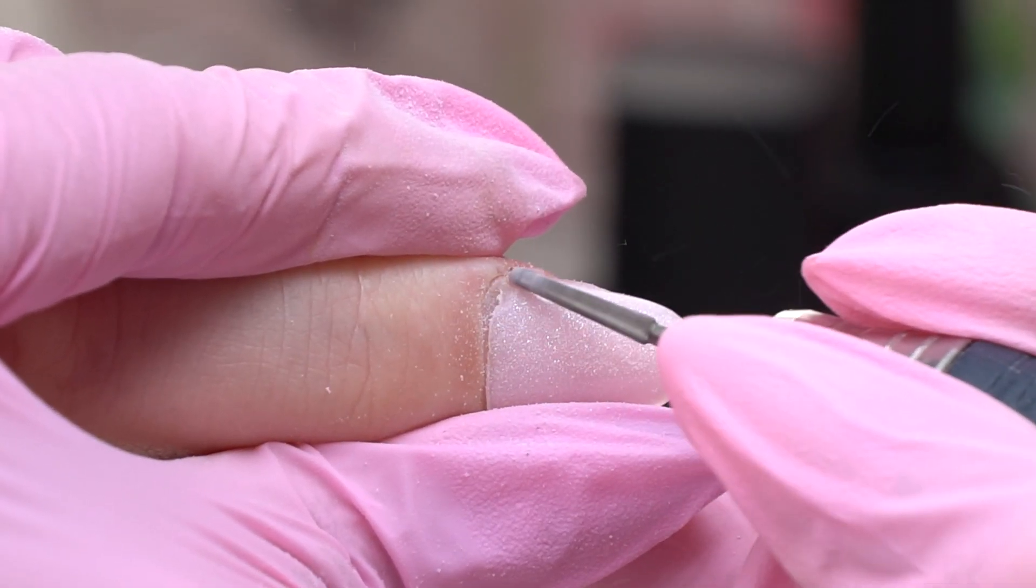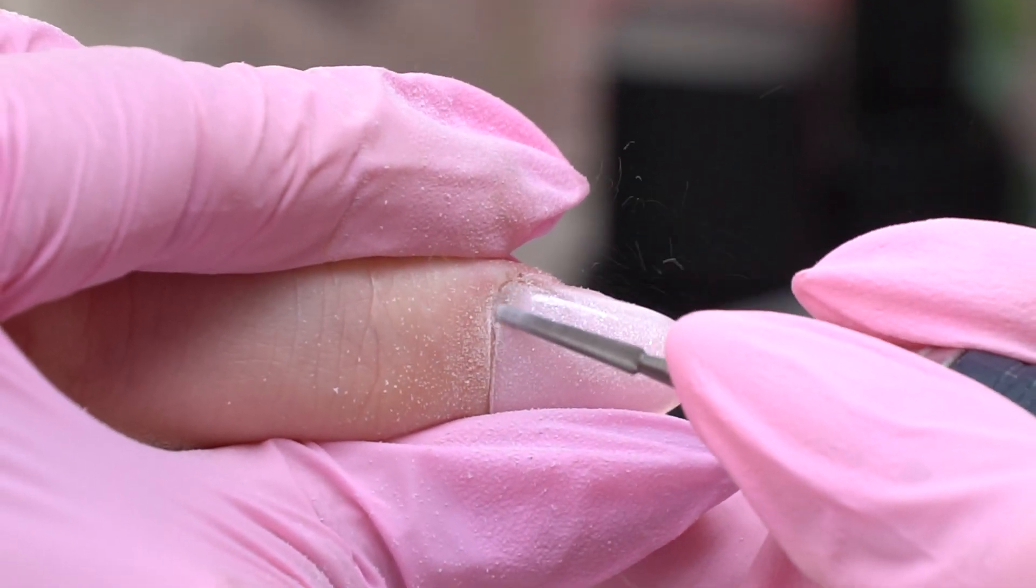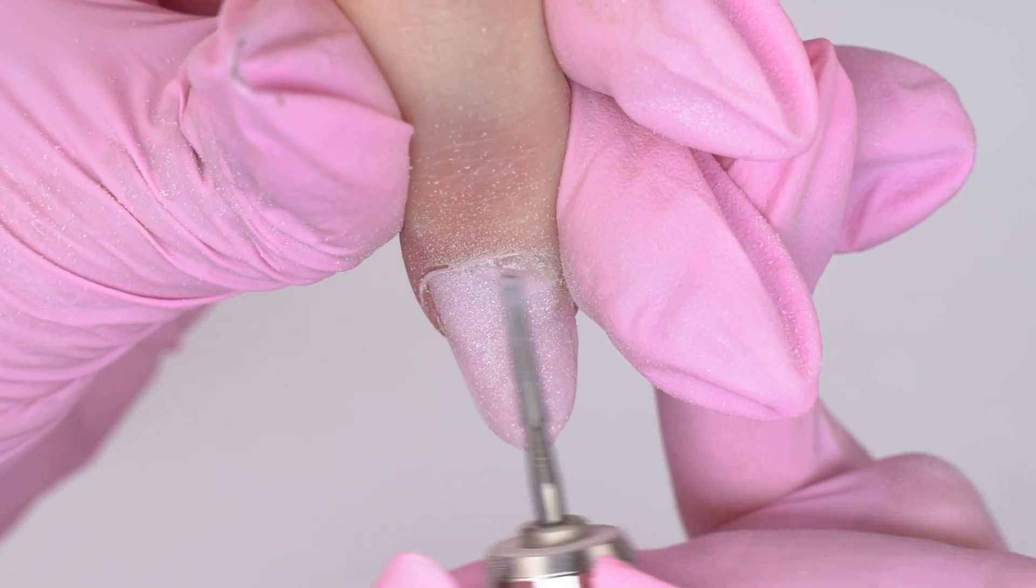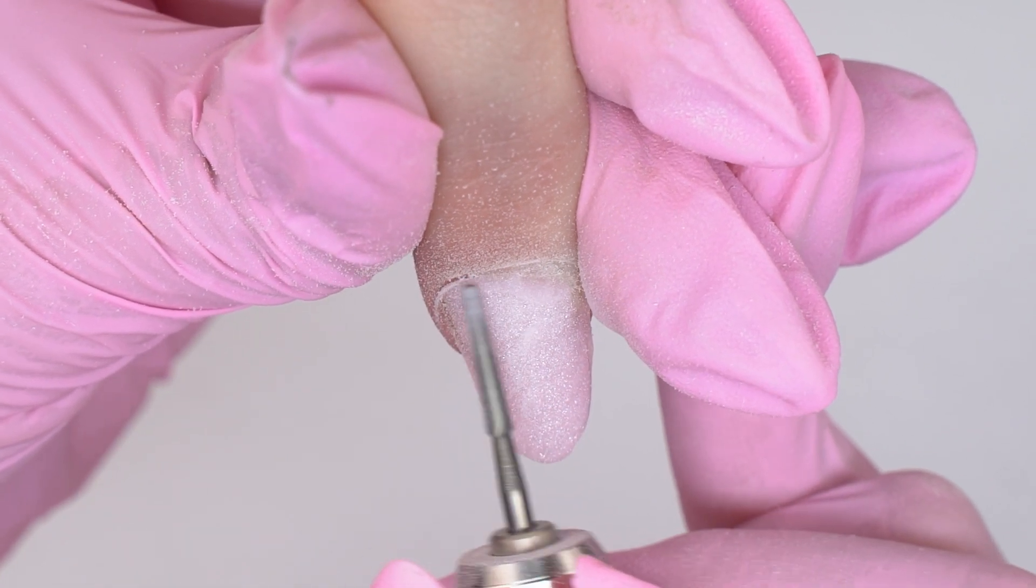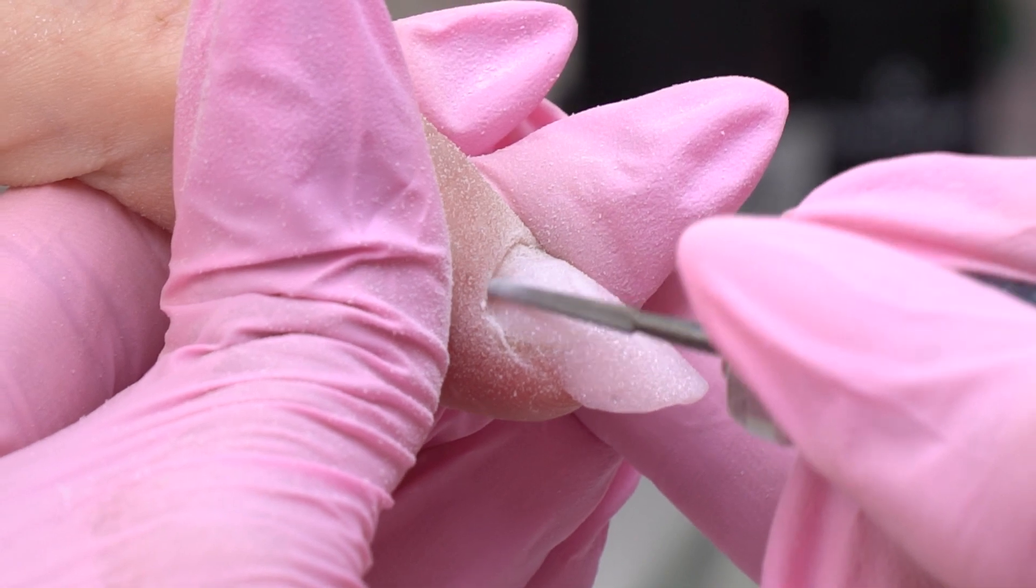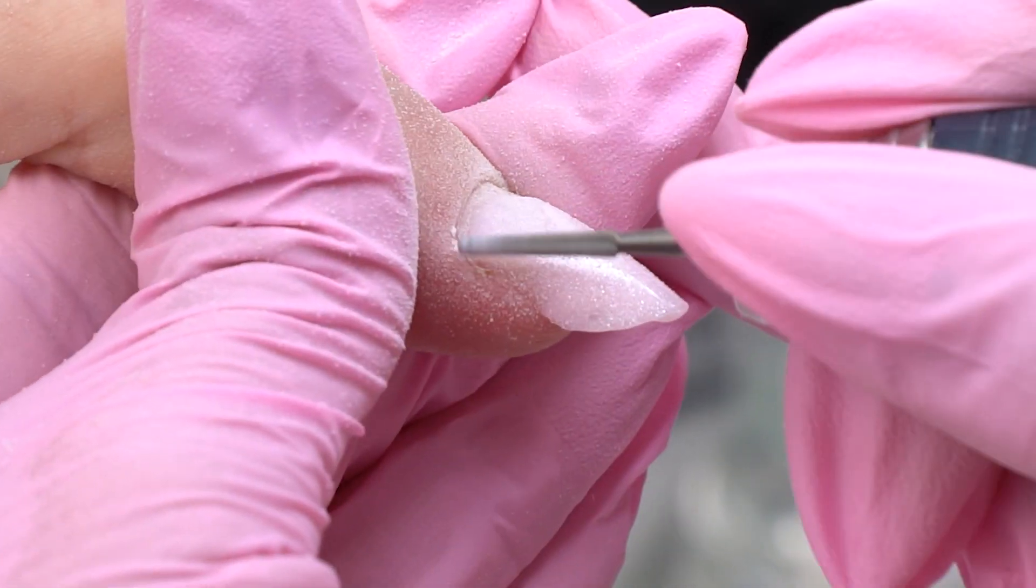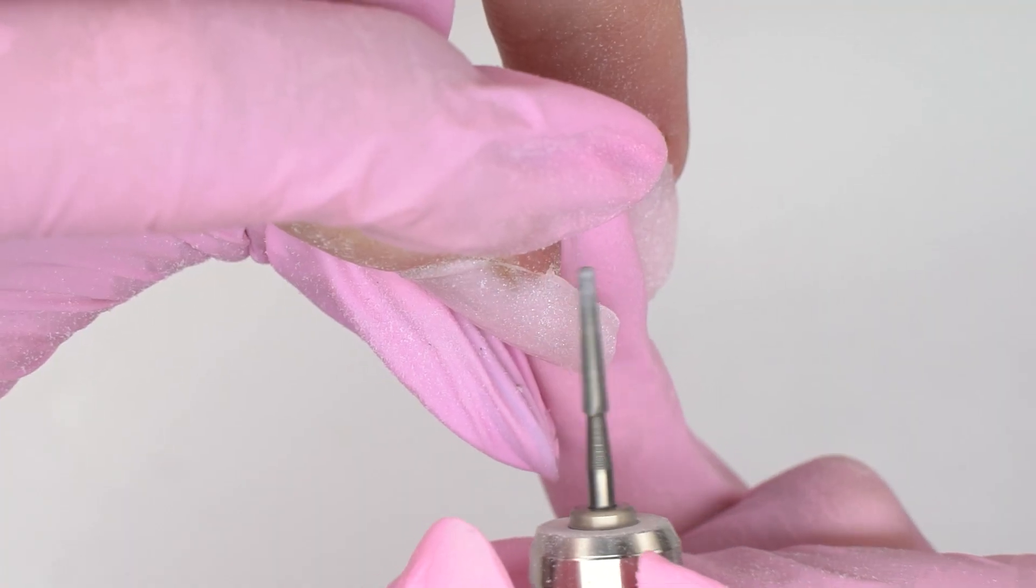Once I'm done with sculpting, I grab a thin carbide drill bit and file out all the excess in the cuticle zone. I'm being careful because my model's nail plate is thin. I can easily over-file it if I press too hard.